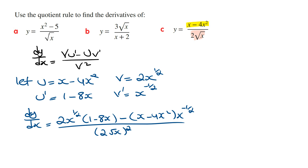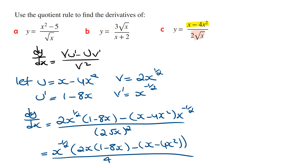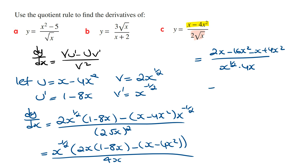From the numerator, we can take out x to the power of minus a half as a common factor, giving x to the power of minus a half times 2x times 1 minus 8x, minus x minus 4x squared. Bringing x to the power of minus a half to the denominator, and expanding the brackets in the numerator, we get 2x minus 16x squared, minus x, plus 4x squared. Cleaning this up gives x minus 12x squared, all over 4 times x to the power of 3 on 2.